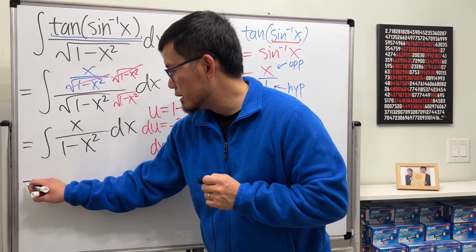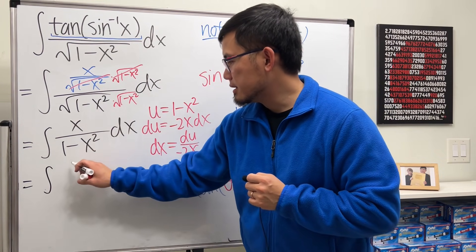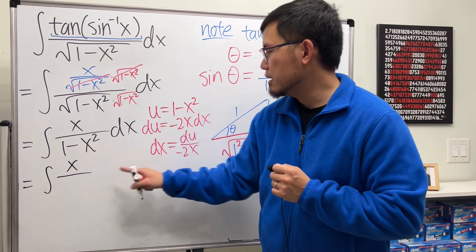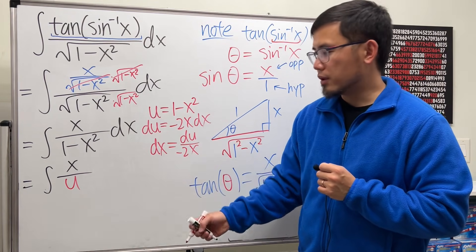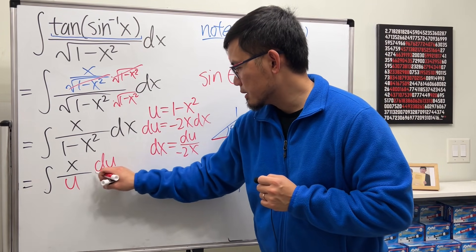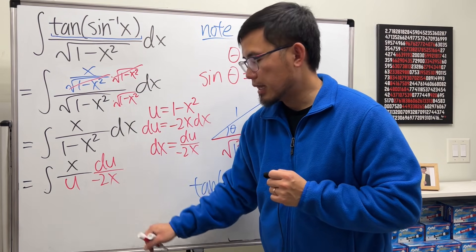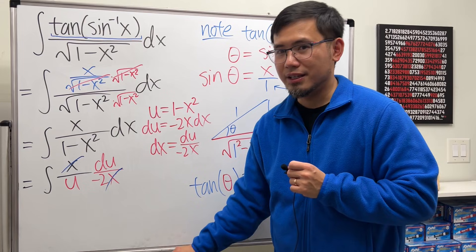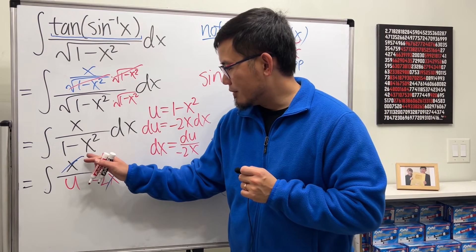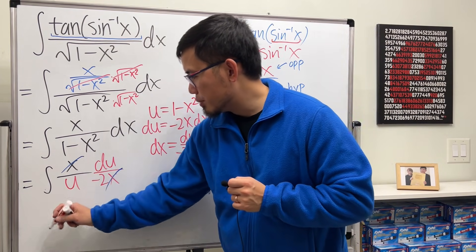Now take this integral to the u world. This is the integral: x is x, over that is our u, dx is du over negative 2x. This and that cancel, very nice, isn't it?